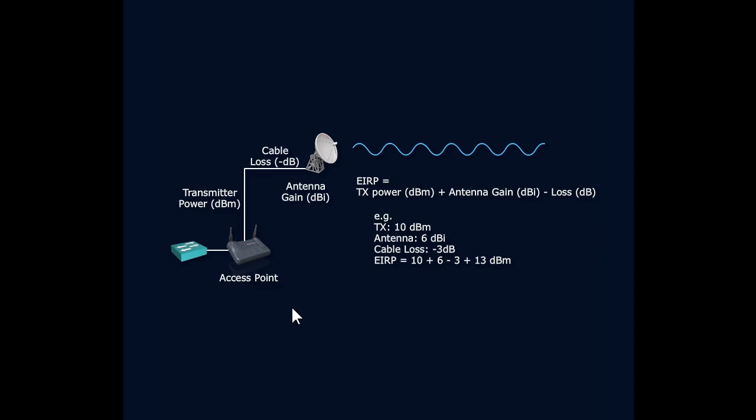We've got our access point and that access point is going to send a certain amount of power. Let's say it's going to send out something really classy like 10 milliwatts of power. Well, 10 milliwatts of power is equal to 10 dBm. So that's kind of our initial strength of power.